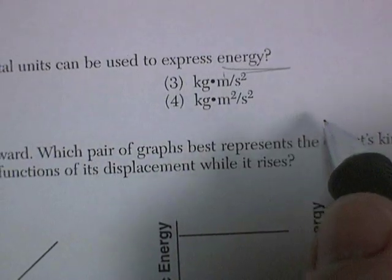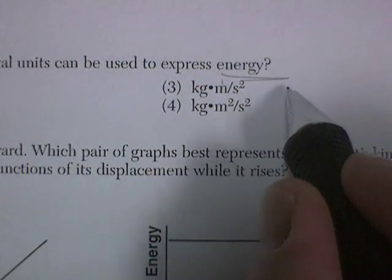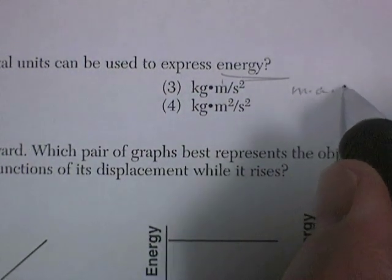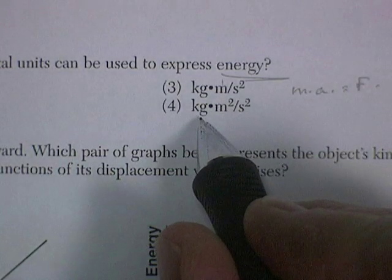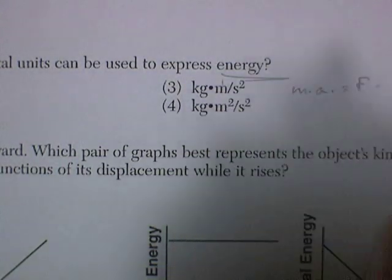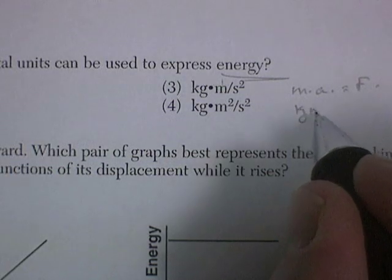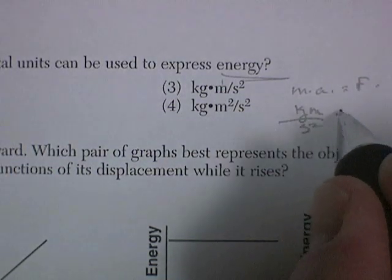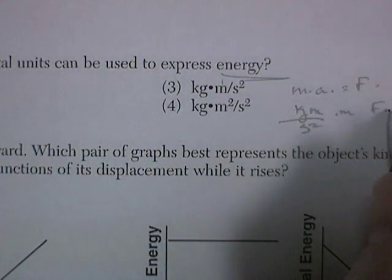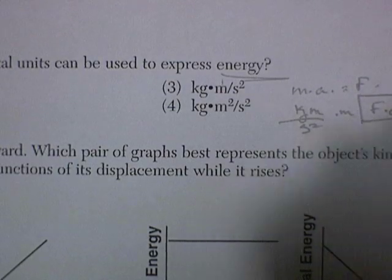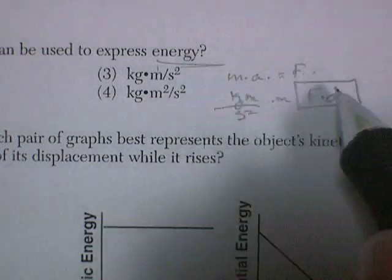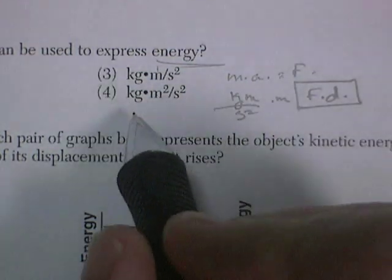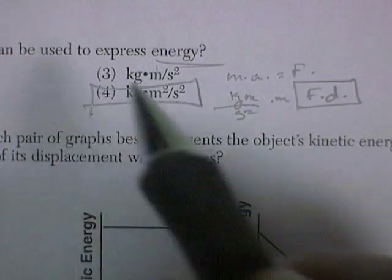Kilogram meters per second squared. Well that's mass times acceleration. That's force. And here we go. Kilogram meters per second squared times meters. That would be force times distance, which is work. And work and energy are the same units. Energy is the ability to do work. So the correct answer would be choice 4.